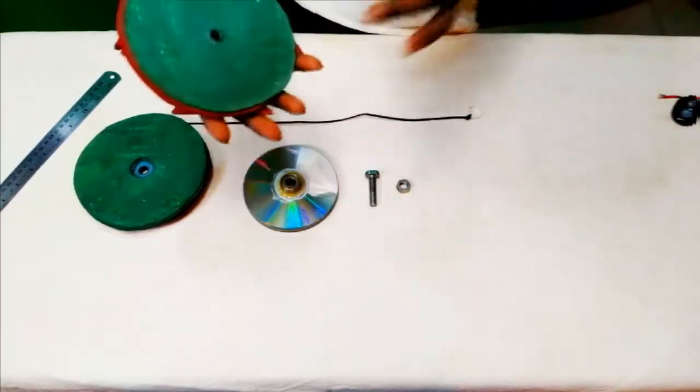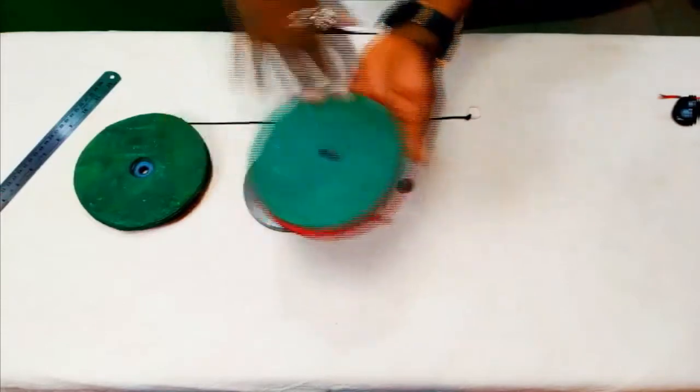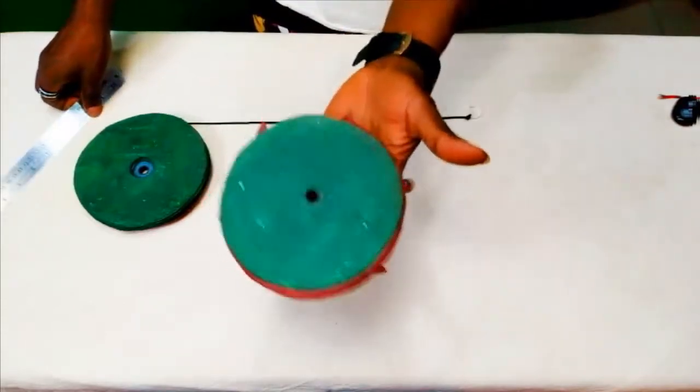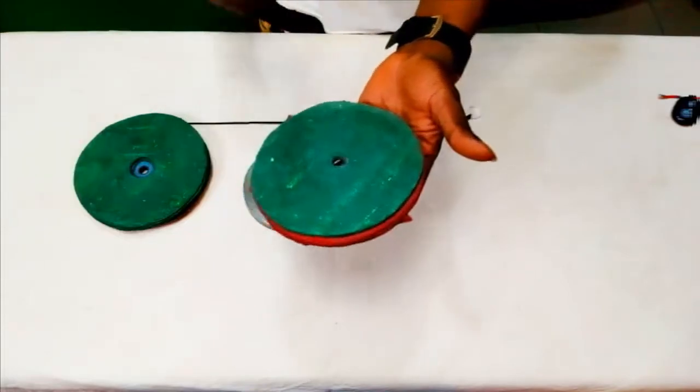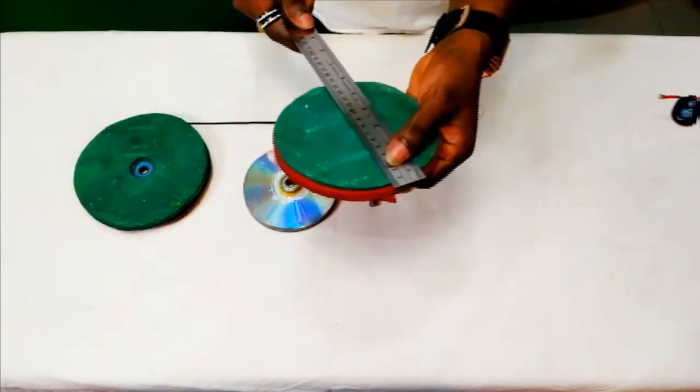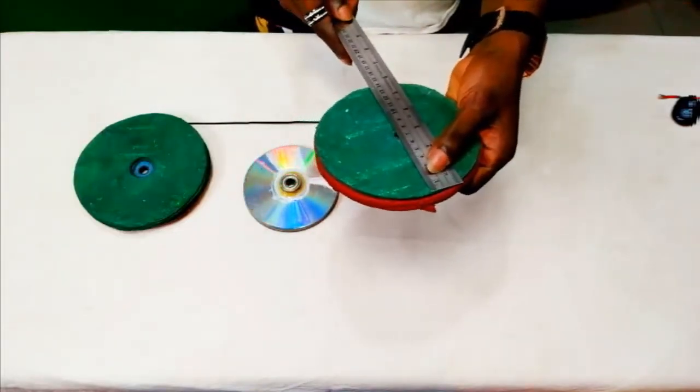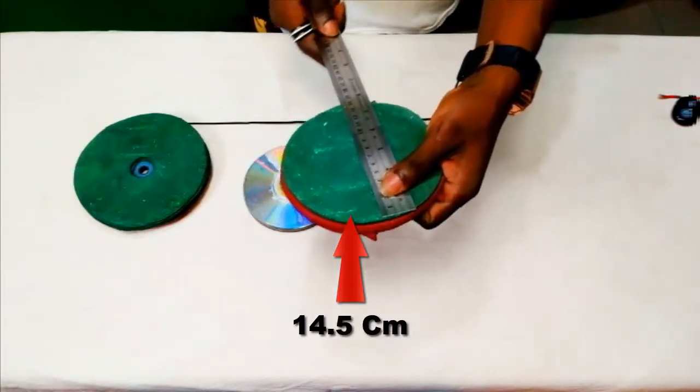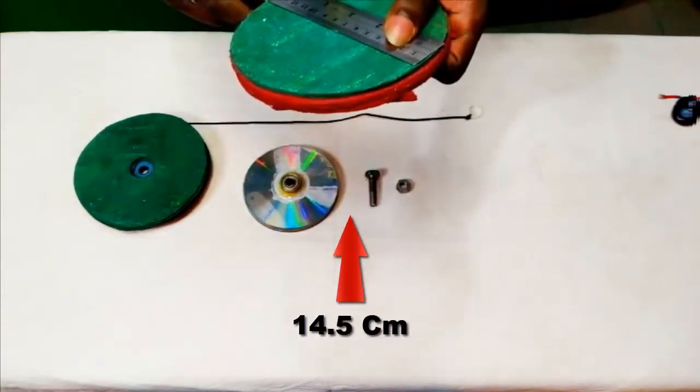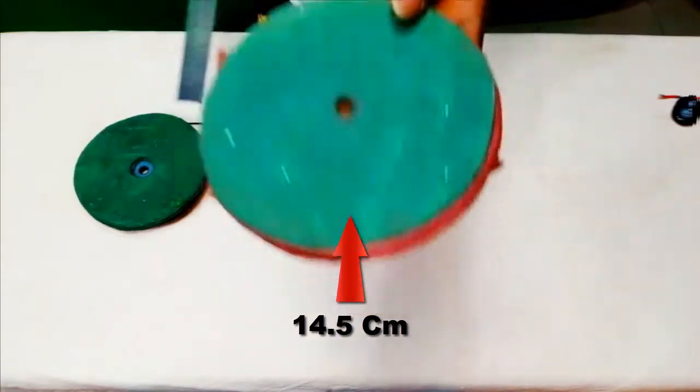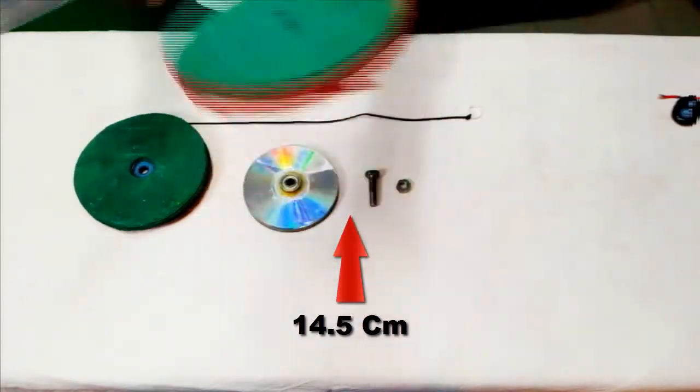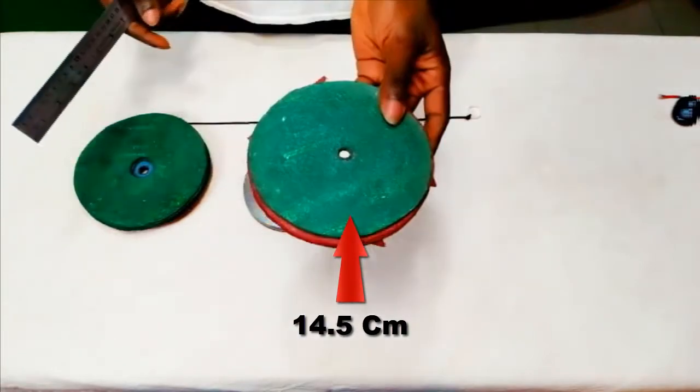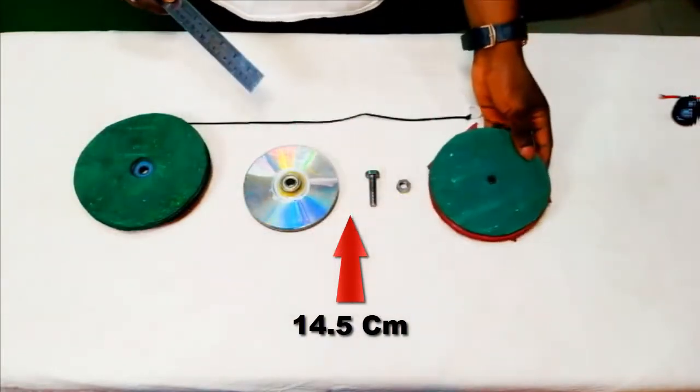So I had to cut the lower part of this project, I had to cut it into a circle. I think I made this, this should be 14 centimeters in diameter. Yeah, 14.5 centimeters in diameter, which is the lower part of The Lazy Susan.